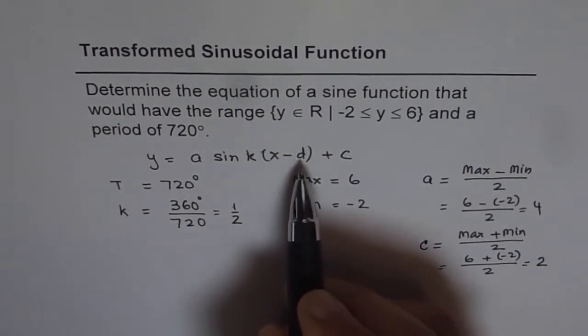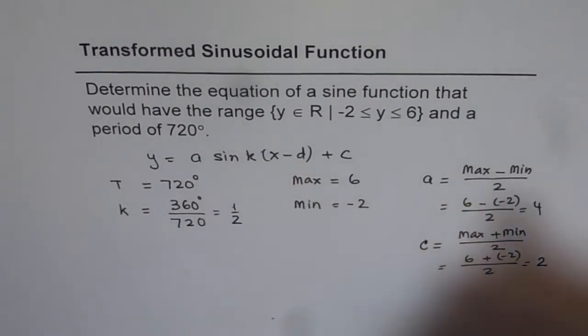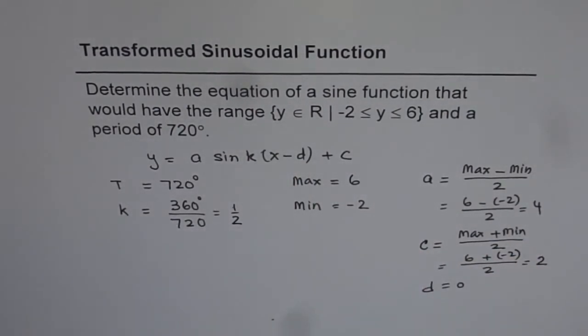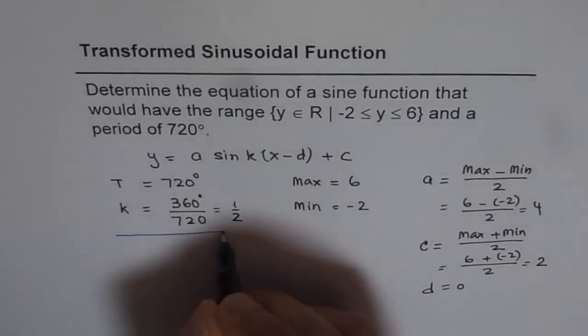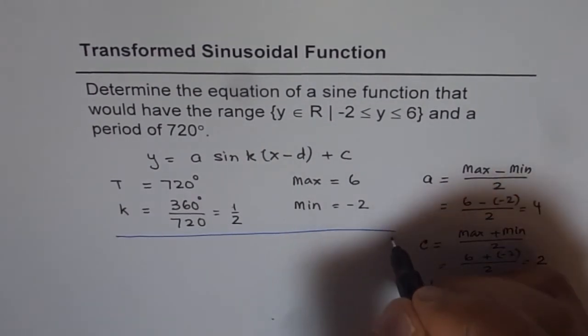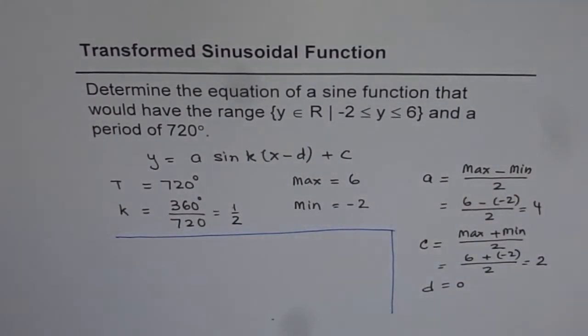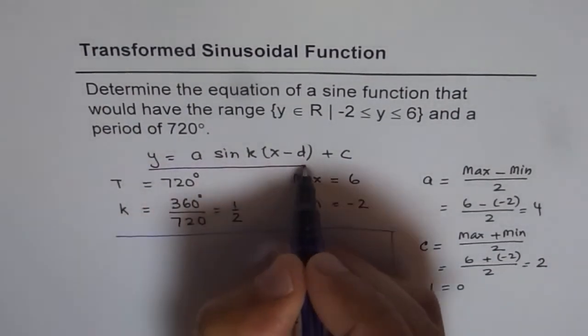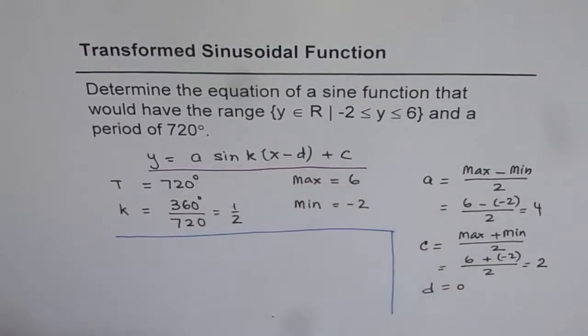Now phase shift is all up to us how we are going to sketch. So for the time being we'll assume d to be 0. So there's no point complicating. So this is all we are given. Now from this information we can write down our equation. So we started with the equation y equals to a sine k times x minus d plus c.